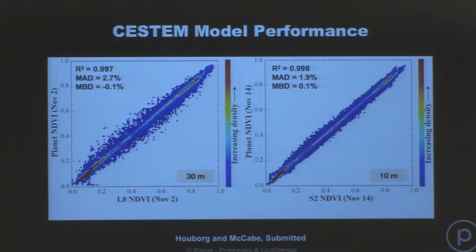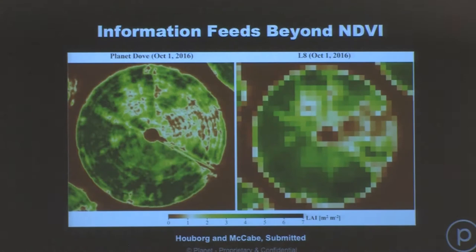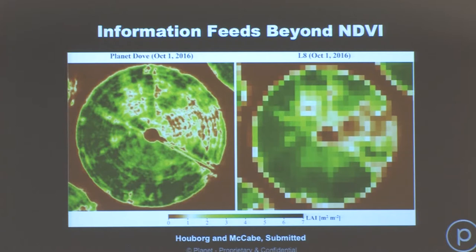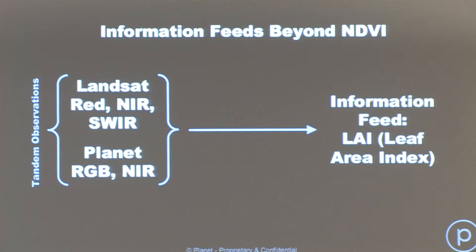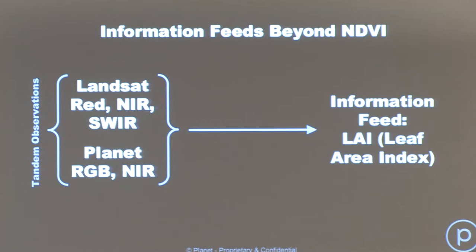This methodological approach introduces something even more novel — interrelating multiple sensors, some of which have spectral bands that others lack. For instance, Landsat has a SWIR band while Planet does not. Matt and Rasmus were able to generate a model intercorrelating those spectral signals from Landsat and Planet to produce a leaf area index feed — even when only Planet data was available and Landsat's SWIR channel was absent — because the model learned how SWIR variation may be indicated in other spectral bands.